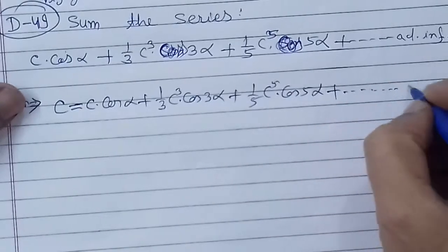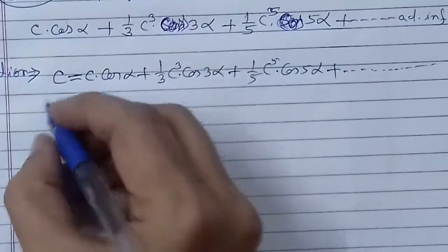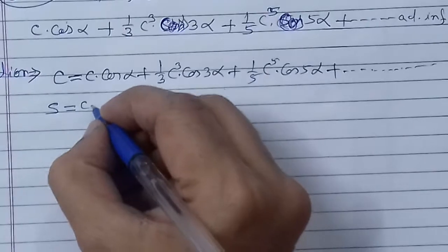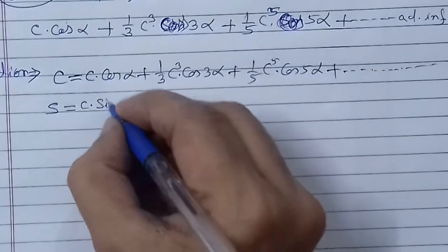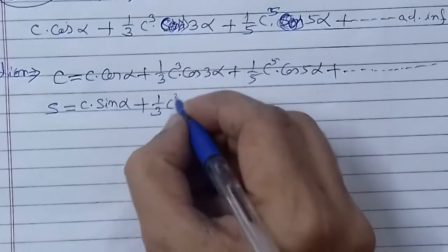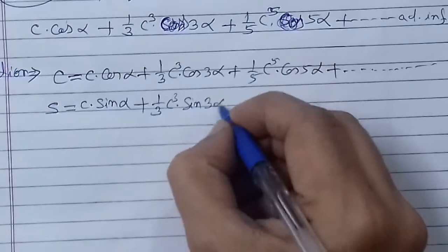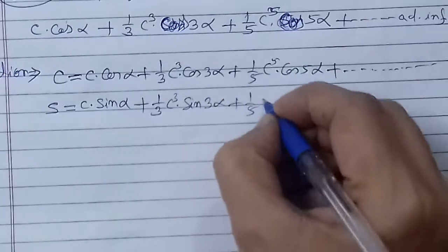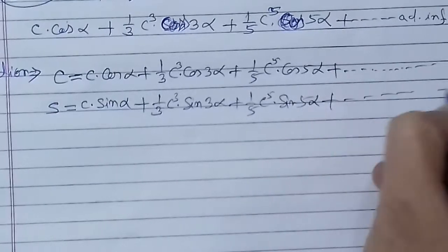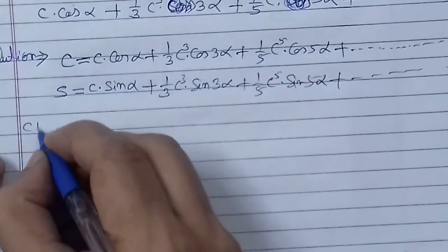The number of terms is infinite. When we write the sine series, the other factors remain the same — only cos is replaced by sin, angles remain the same. So the sine series S = C sin α + (1/3) C³ sin 3α + (1/5) C⁵ sin 5α + ... to infinity. Our method is the C + iS method.